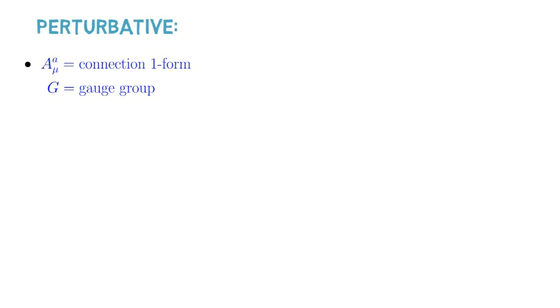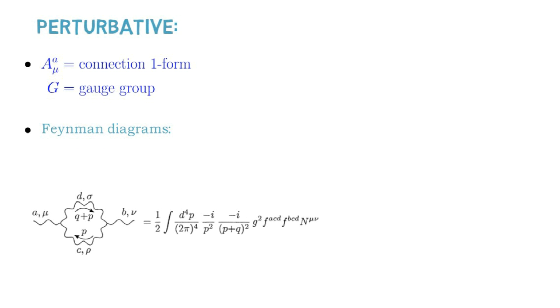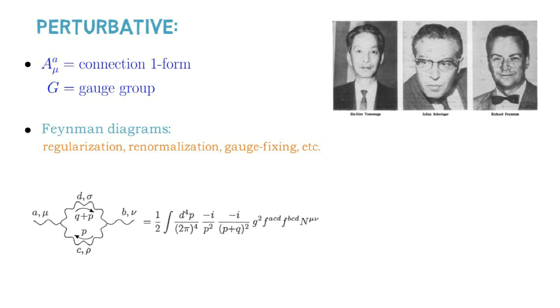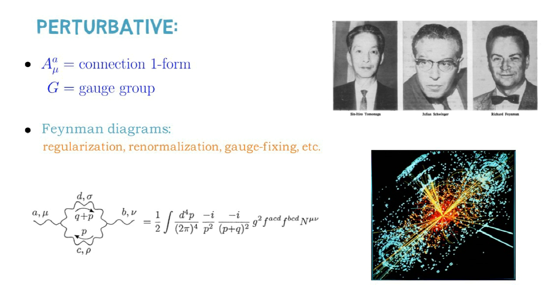The perturbative approach computes quantities using the Feynman diagram method, in which the full range of quantum field theoretic techniques involving regularization, renormalization, and gauge fixing come into play. This Feynman diagrammatic method has been the cornerstone of high energy physics, beginning with the early success of quantum electrodynamics in the previous century, and culminating in the recent discovery of the Higgs boson.